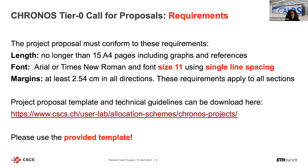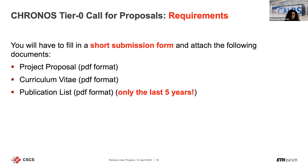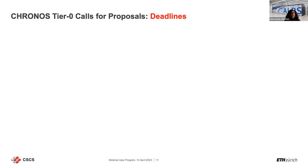Chronos proposals must be 15 pages maximum, using Arial or Times New Roman, single spaced — all details are on our webpage. You also have to submit everything in PDF: a short submission form, your project proposal, your CV, and your publication list. When you submit your publication list, please do not submit 100 pages — we are only interested in publications from the last five to ten years, not your entire career.